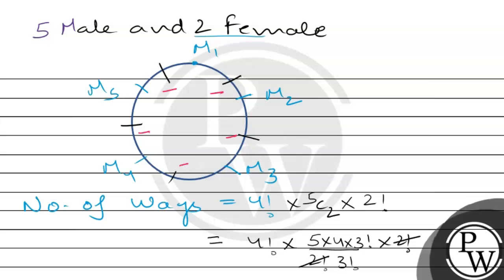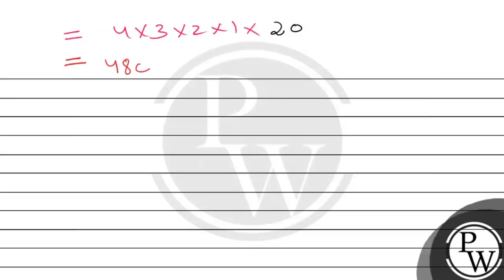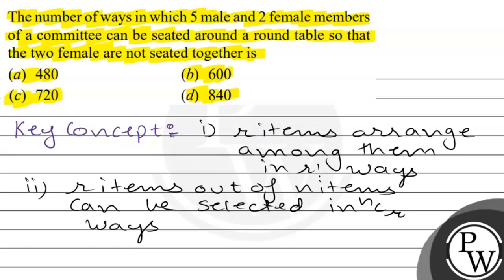After cancellation, we have 4 factorial multiplied by 5C2 multiplied by 2 factorial. Computing: 4 factorial equals 4 × 3 × 2 × 1 = 24. And 5C2 = 10, multiplied by 2 factorial gives 20. So 24 multiplied by 20 equals 480. This is the correct answer, so the final answer is option A: 480.